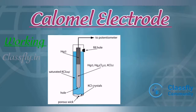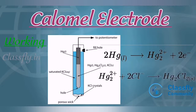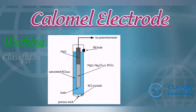This anodic reaction involves two steps. In the first step, mercury is oxidized to mercurous ions: 2Hg → Hg₂²⁺ + 2e⁻. In the second step, the chloride ions supplied by the potassium chloride solution combine with the mercurous ions — Hg₂²⁺ + 2Cl⁻ → Hg₂Cl₂ — forming insoluble mercurous chloride.